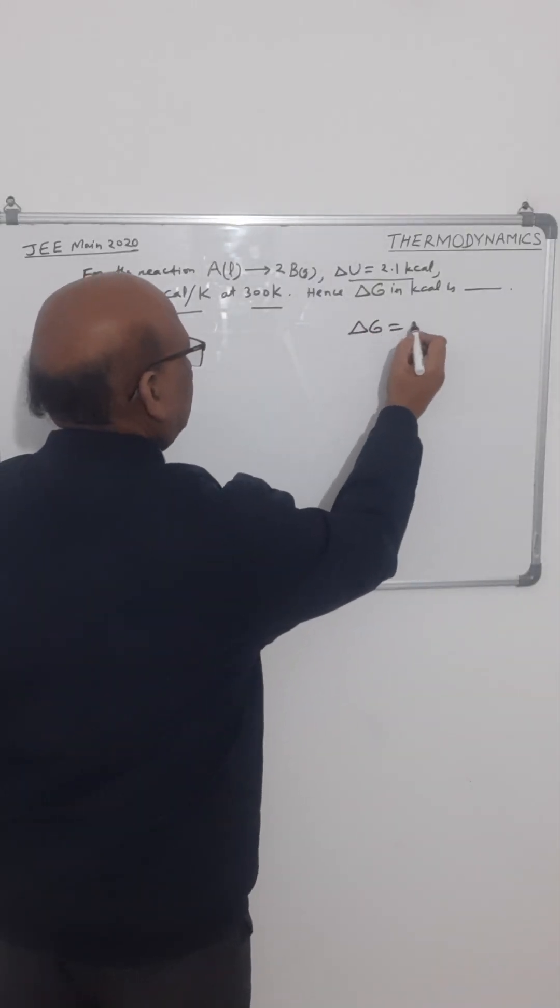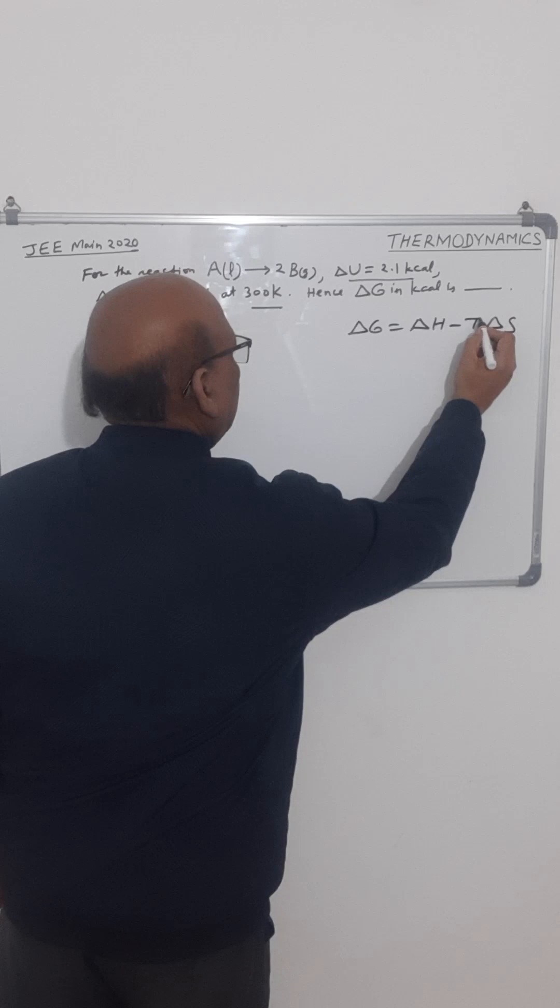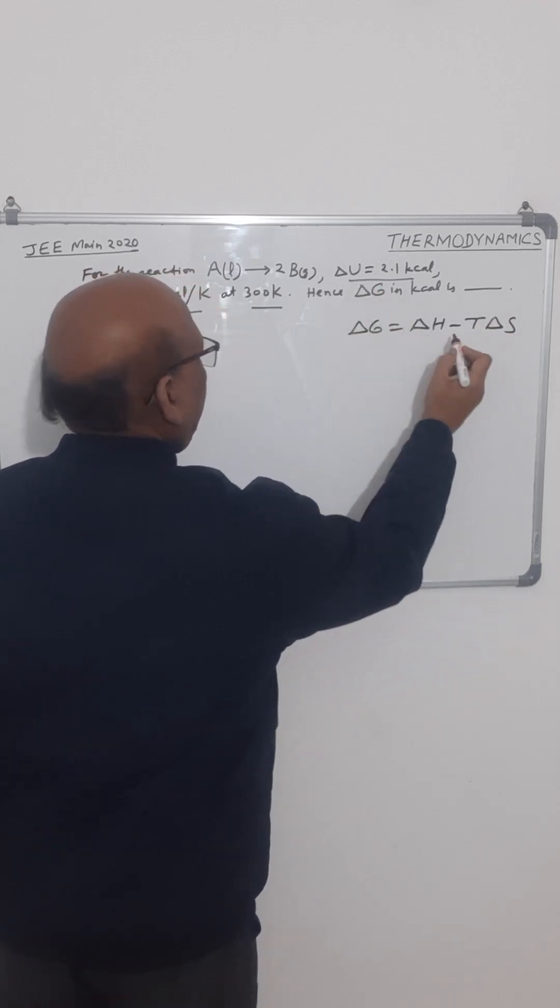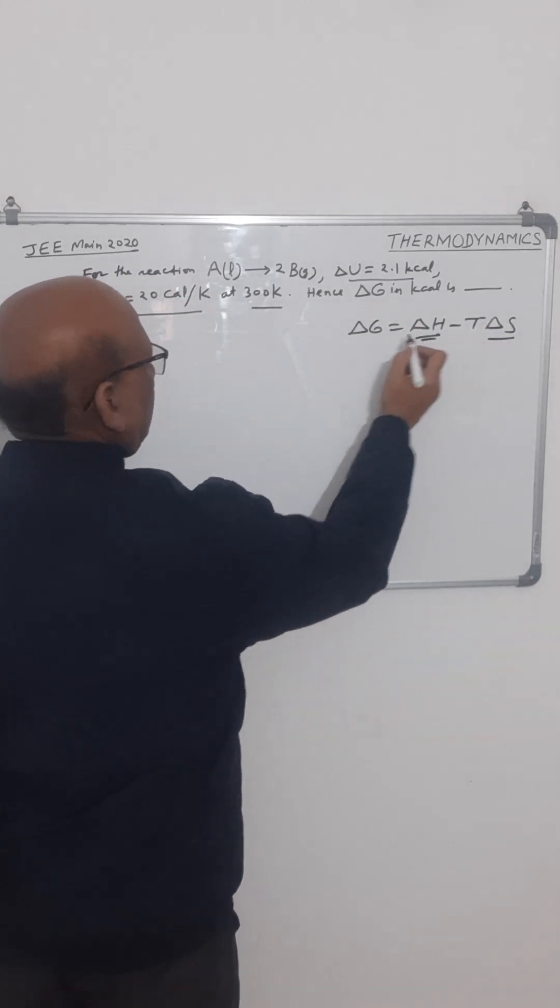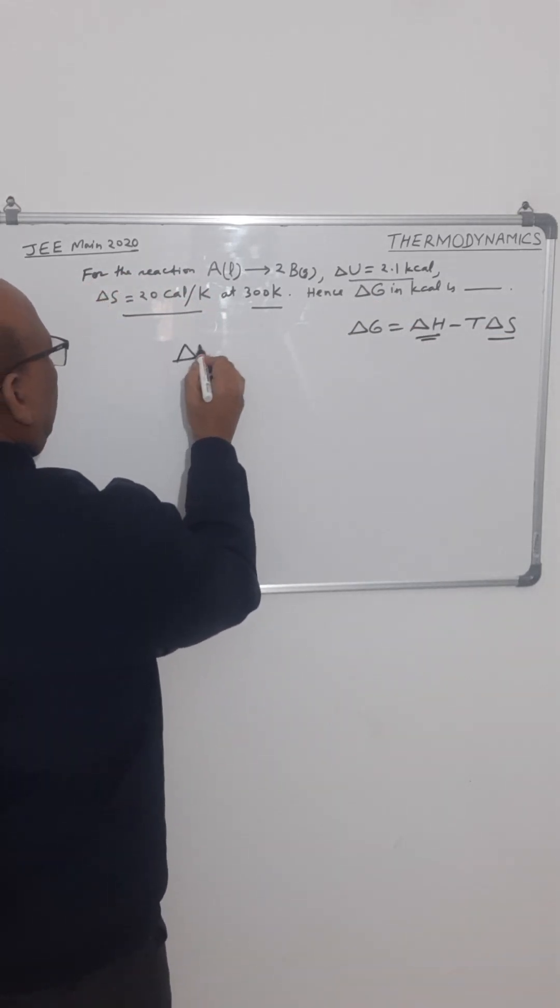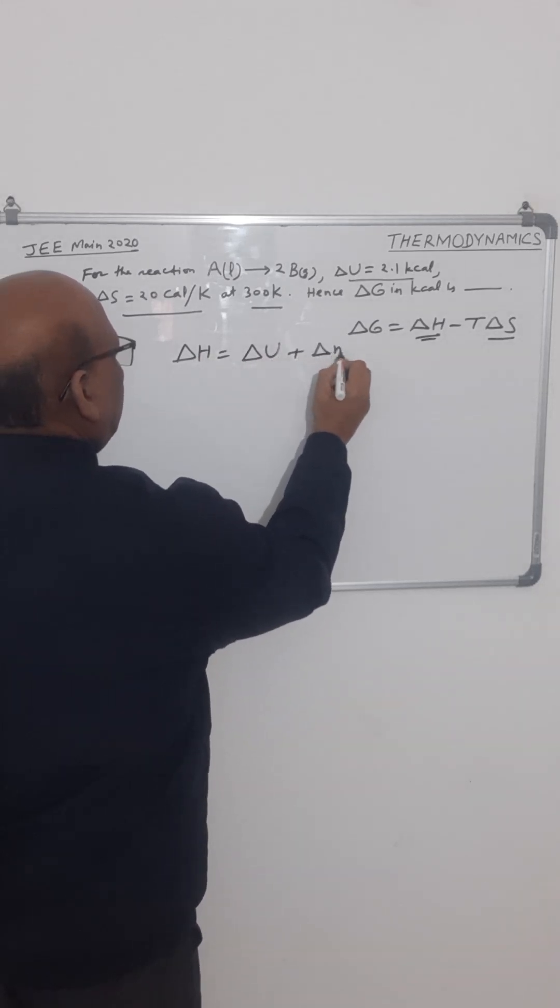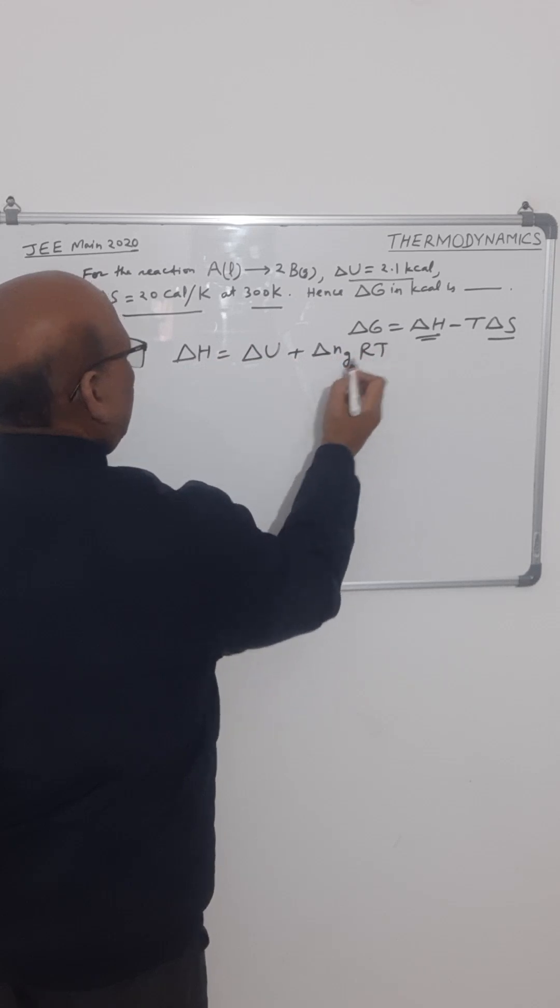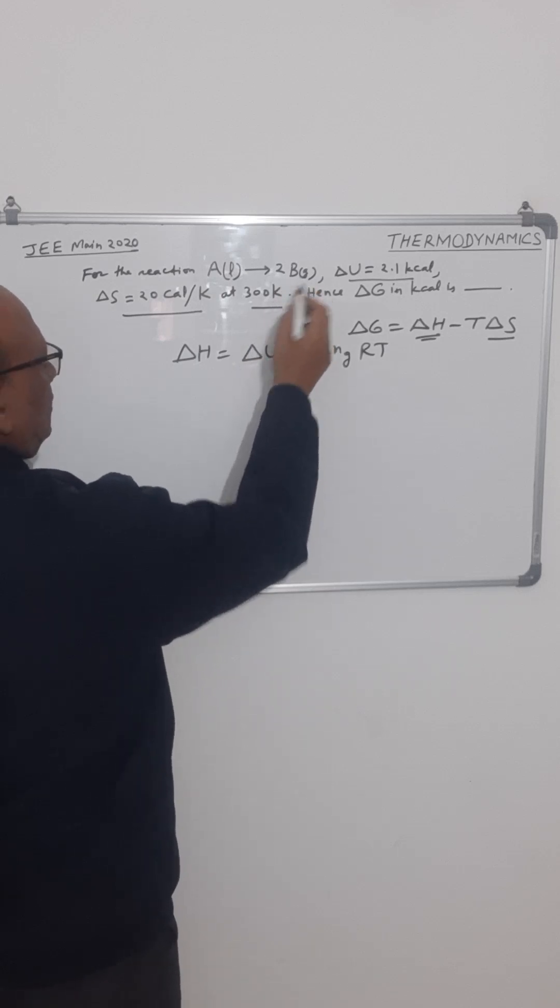We know that delta G is equal to delta H minus T delta S, but delta H is not given. So we can find out delta H by delta U plus delta NG into RT, because this is a gas phase reaction, because gas is the product.